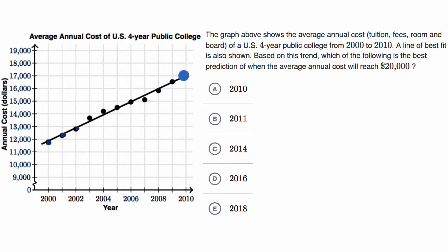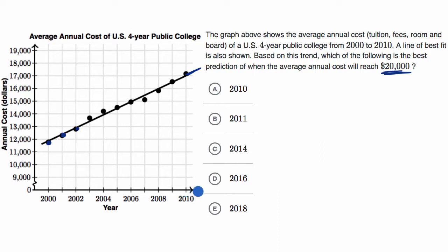They are essentially asking us to use this line of best fit to extrapolate — to predict when the average annual tuition cost will reach $20,000. There are two ways you could do this. You could try to continue this graph visually, adding a marker at $20,000 and seeing where the line intersects — it would be someplace out here — and try to estimate that.